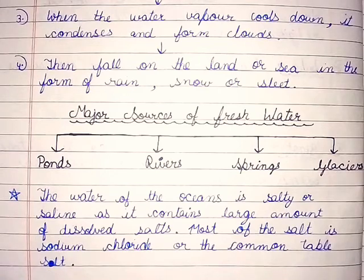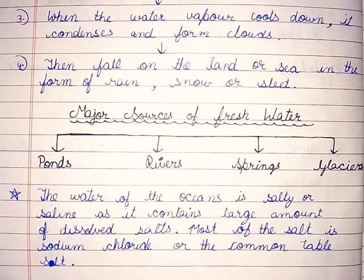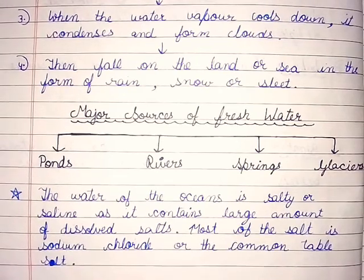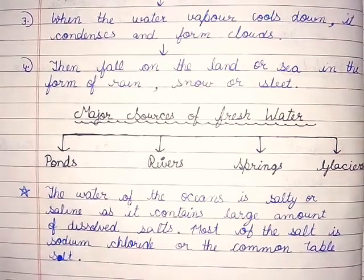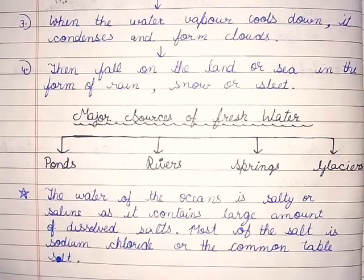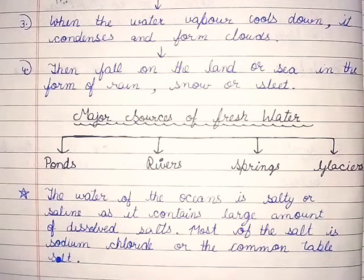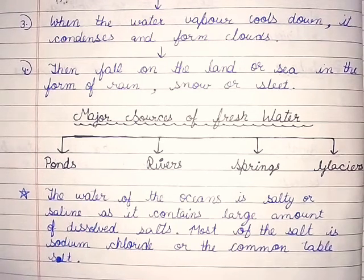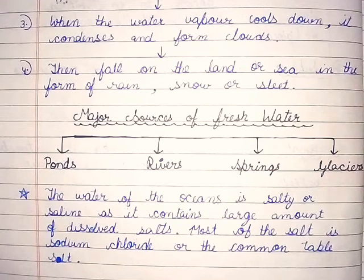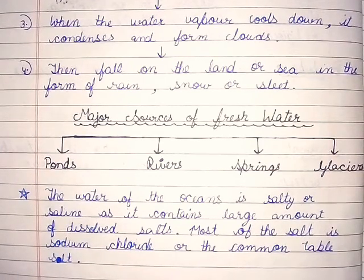Major sources of fresh water are ponds, rivers, springs and glaciers. The water of the oceans is salty or saline as it contains a large amount of dissolved salts. Most of the salt is sodium chloride, or the common table salt.